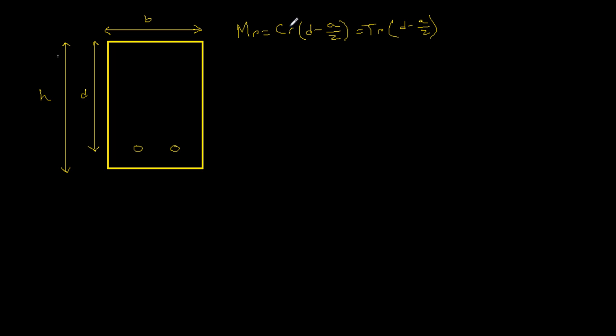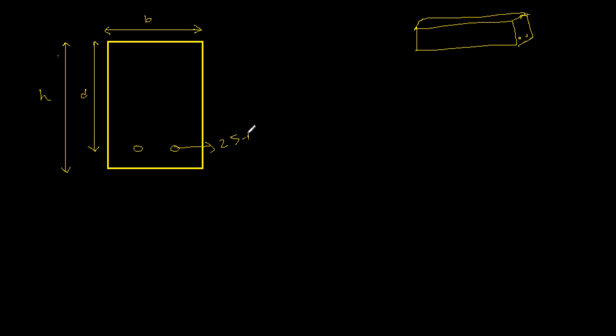So in this example we have two rebars. This is a cross section of the beam, which is right here, with two rebars, 25M bars. If we look at the back of our textbook, Appendix A1 Table A1, we will find that the diameter is equal to 25 millimeters and the area of one steel is equal to 500 millimeter squared.